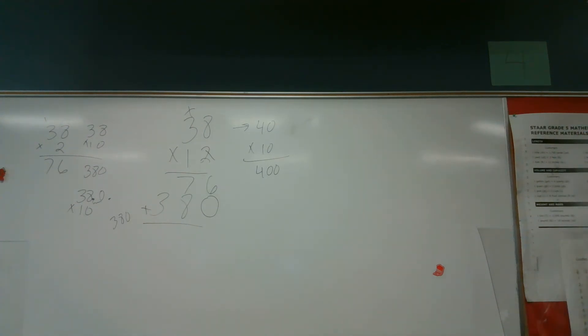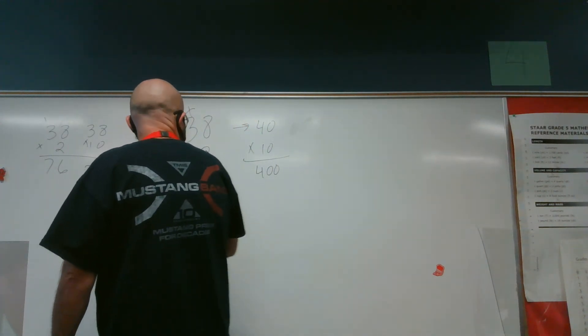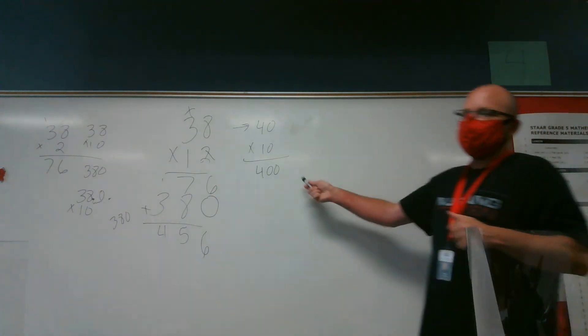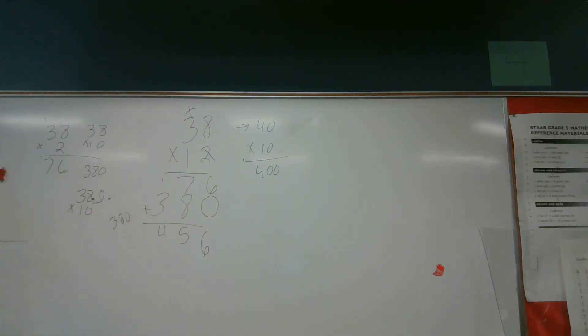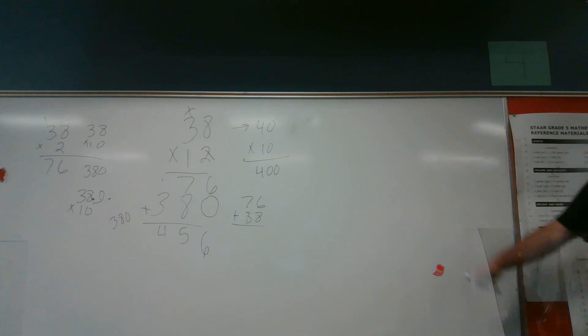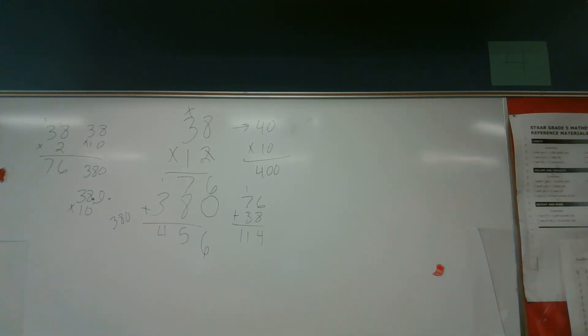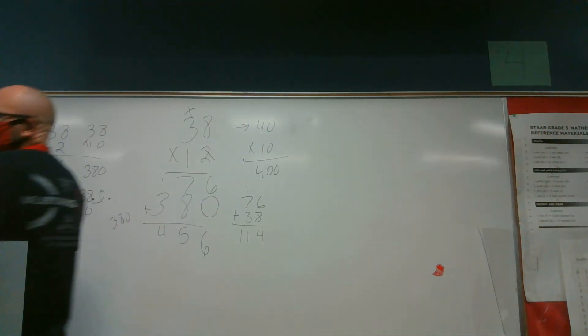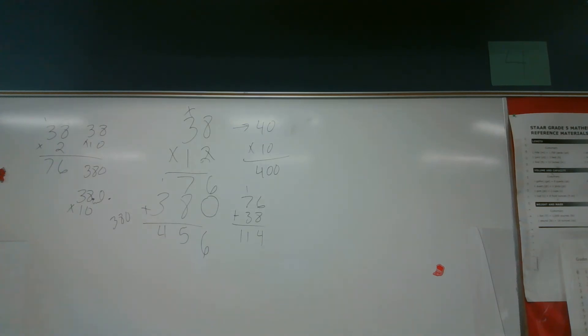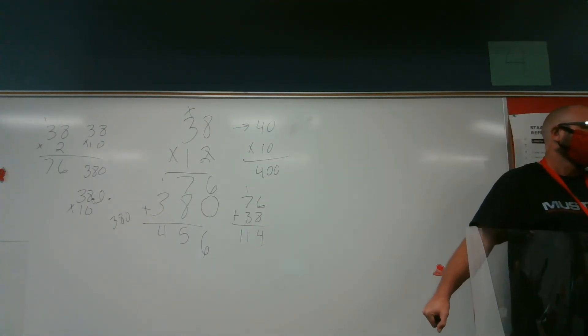I add these two products together. 6, 15, 456. Close to my estimate. Now, the reason I estimate is say I did something wrong. Say I ended up with 76 plus 38. I forgot to put that zero down in the ones place. Then I do this and I have 6 and 8 is 14, 10, 11. Then I get 114. I can look at myself and I can say self, those don't seem very close together, self. And then self can say, oh, let's look back at what I did. And I can see that when I was multiplying by the tens place, I did the same thing as multiplying by the ones place. I didn't put my zero down there. That's why we estimate first.